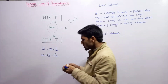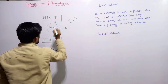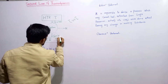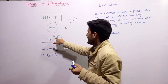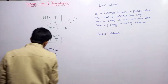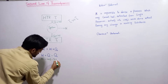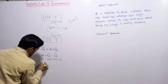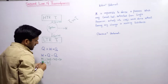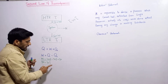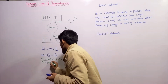Work done W equals the difference between heat absorbed Q1 and heat expelled Q2. For example, if the system absorbed 100 joules from the high temperature reservoir and expelled 70 joules, then W = 100 J − 70 J = 30 joules. So the work done performed by the system is 30 joules.